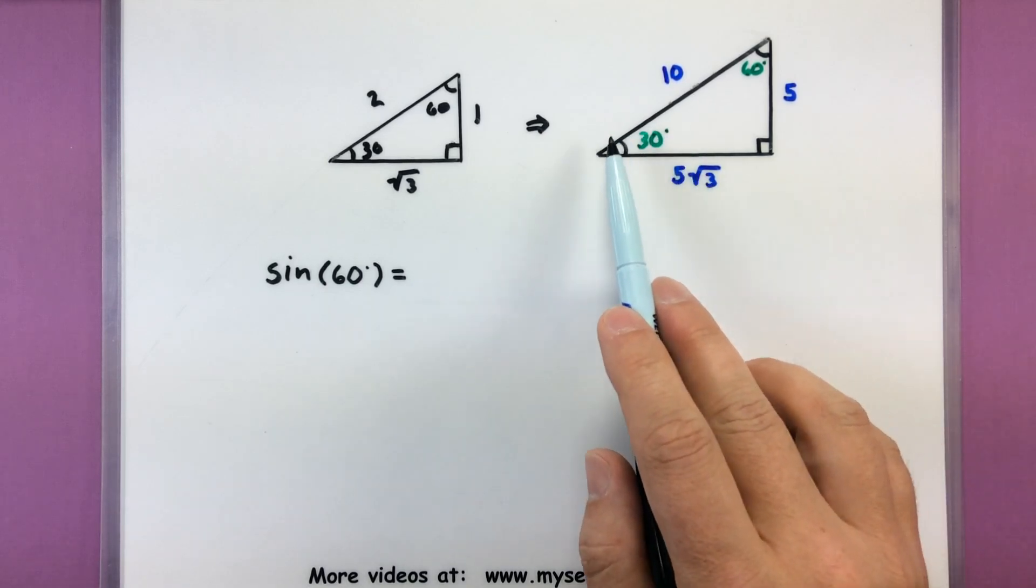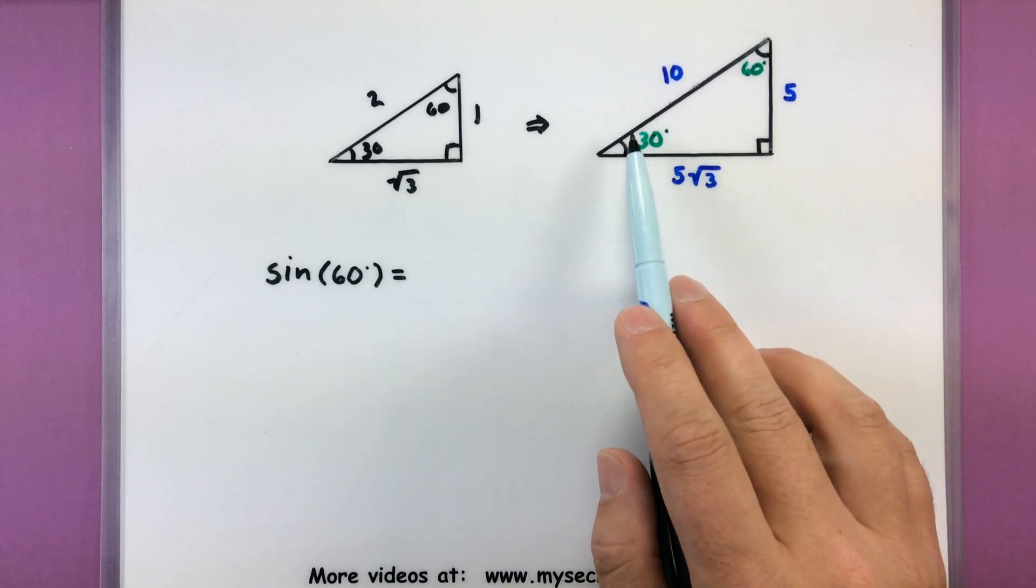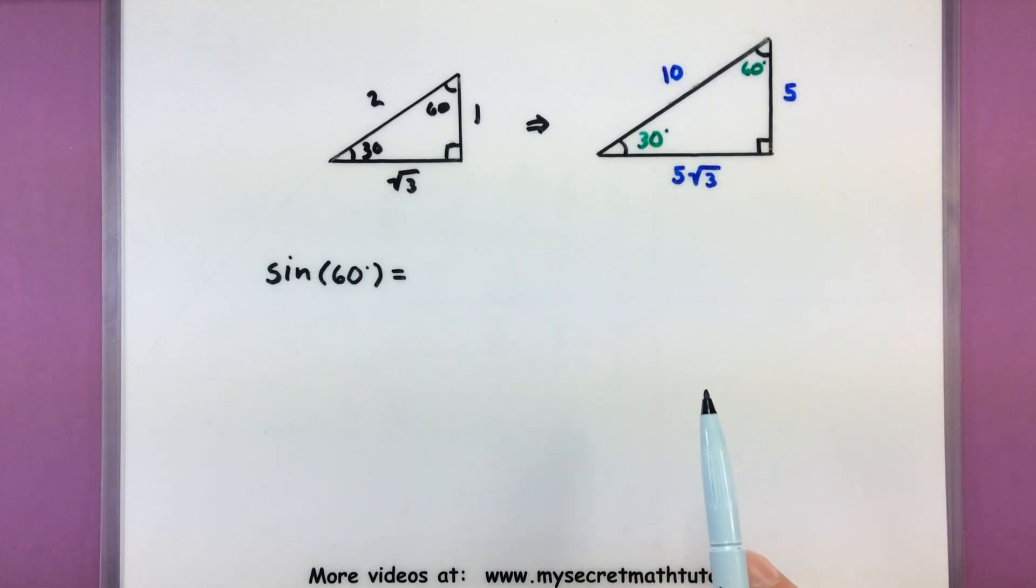So what if I really want to find the sine of, say, one of these angles in here? Do I need to use these sides, or should I use the ones that we saw earlier? It does not matter what you use. In fact, we're going to use these sides to show that that scaling factor actually cancels out, and it doesn't really play a part.